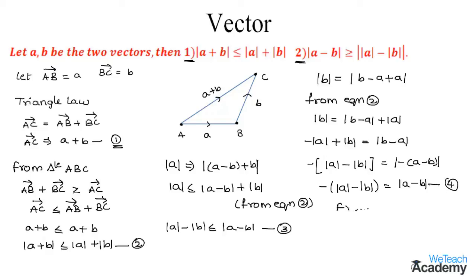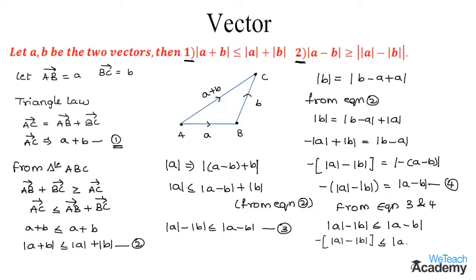From equation three and equation four, we have: |a| - |b| ≤ |a - b|, and -(|a| - |b|) ≤ |a - b|. Since the length of a triangle cannot be negative, we can conclude from these two equations that |a - b| ≥ | |a| - |b| |.